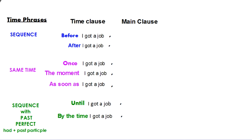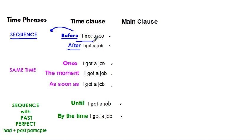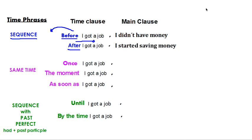When we use a time clause, we always use a time phrase to indicate time. When we're talking about a sequence of events, we can use things like 'before' and 'after.' Before indicates something that happened prior to the action, and after indicates something that happened later than the action. So, 'before I got a job, I didn't have any money,' or 'after I got a job, I started saving money.' Before and after are for sequences — one thing happened before another, or one thing happened after another.